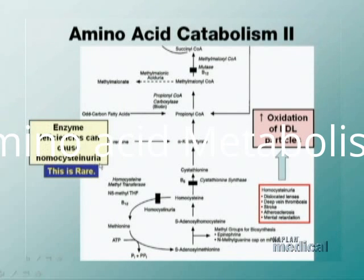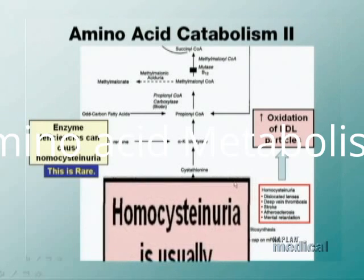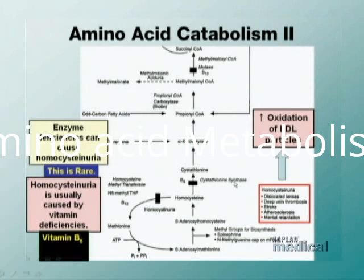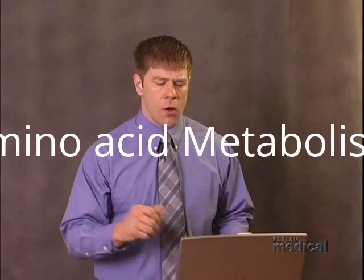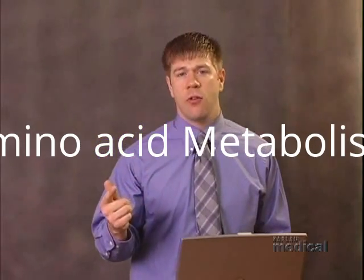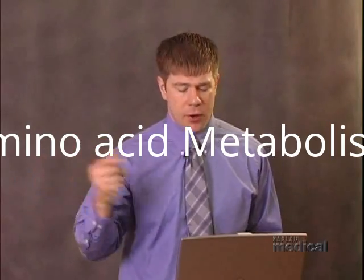Common themes: enzyme deficiencies like homocysteine methyltransferase and cystathionine synthase are rare causes of elevated homocysteine, but vitamin deficiencies — specifically vitamin B6, vitamin B12, and folic acid — are more commonly seen causes. The most important clinical points of elevated homocysteine are: atherosclerosis, deep vein thromboses, dislocated lenses, and potential mental retardation.